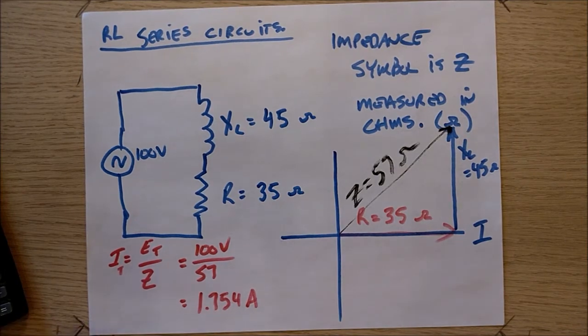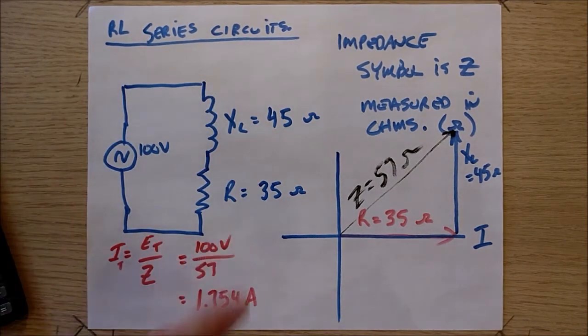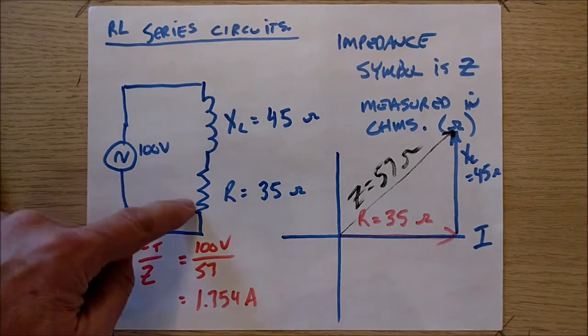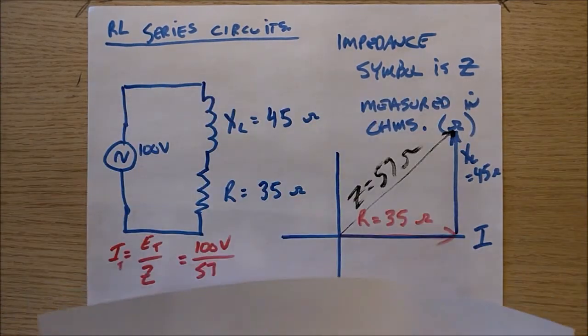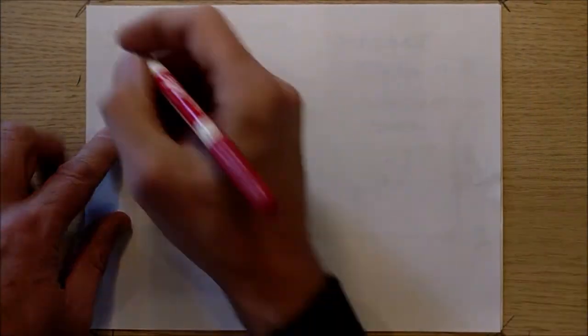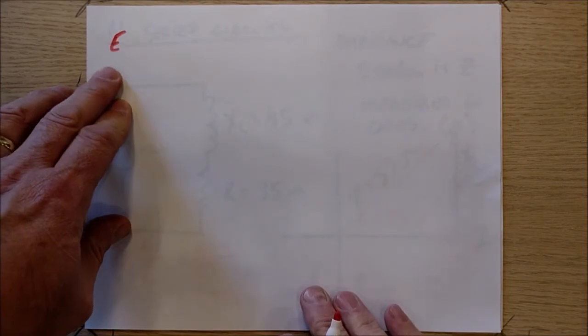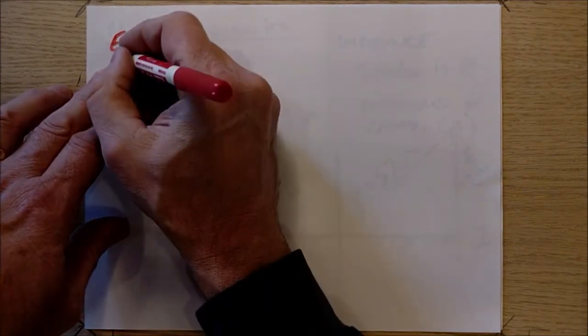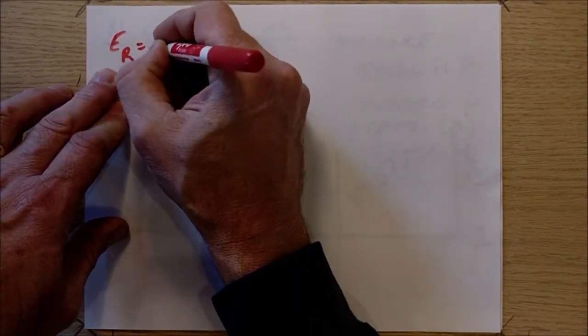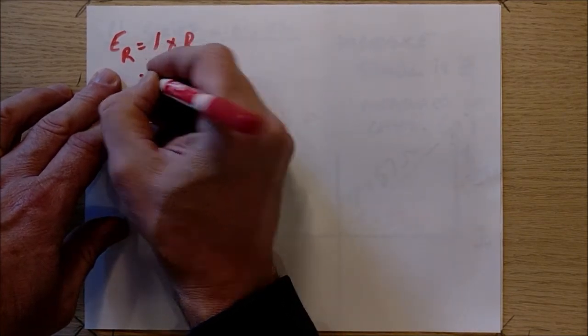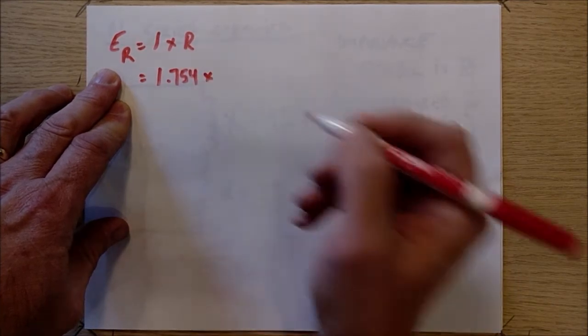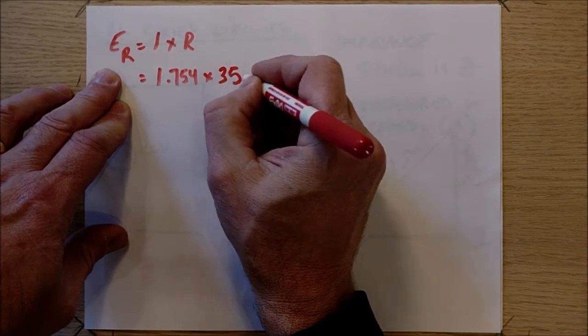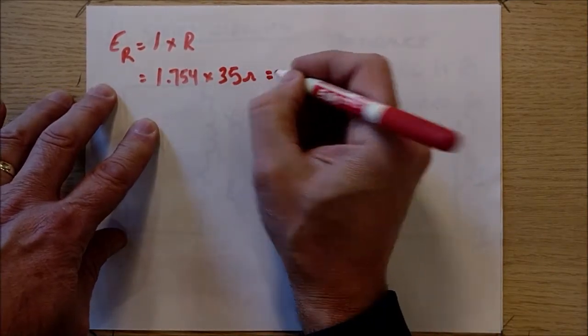Now that we've calculated the total circuit current, we've just basically applied Ohm's law to the entire circuit. Now I would like to actually apply Ohm's law to the individual components in the circuit, just like we did with our resistor circuit. And so I'm going to do that. If I want to calculate E, the voltage dropping across the resistive part of the circuit, we're going to call that ER, and it is I times R. And we just calculated the current at 1.754 amps, and the resistive part of the circuit was 35 ohms.